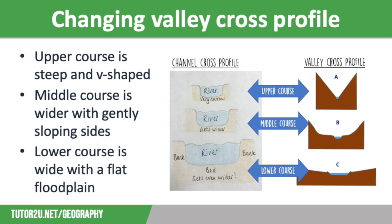In the middle course, the valley cross profile becomes wider and with more gently sloping sides. There is a small flood plain here too. And in the lower course, the valley cross profile is really wide, with a flat flood plain on both sides of the river channel. There may also be levees on the side of the channel itself.